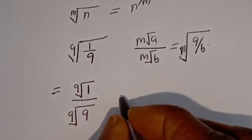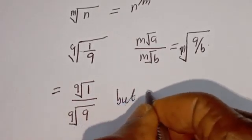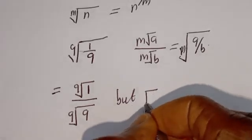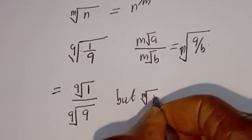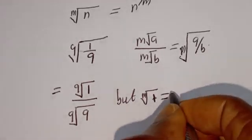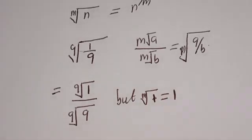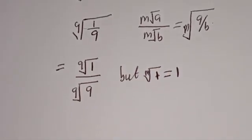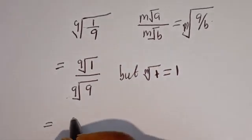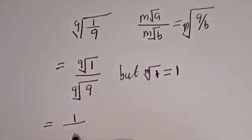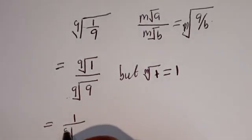But the m-th root of 1 is equal to 1. Then this can be written as 1 divided by the 9th root of 9.